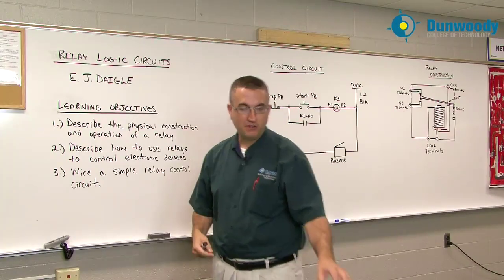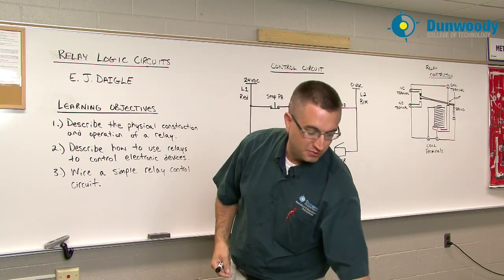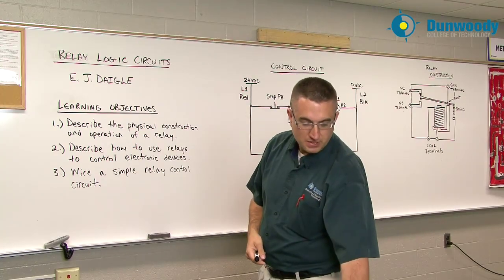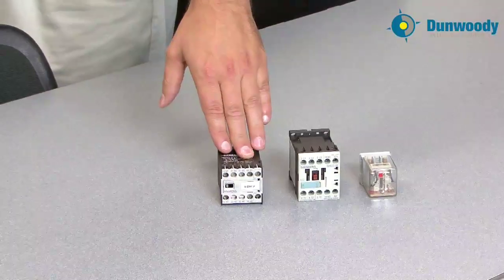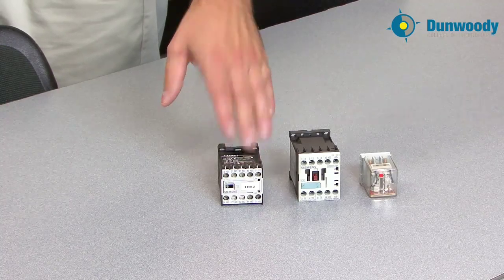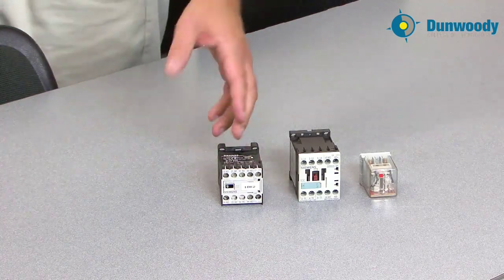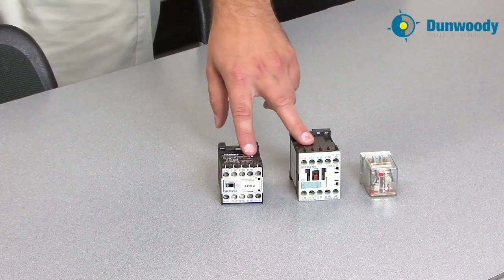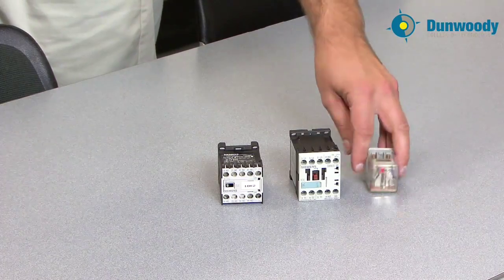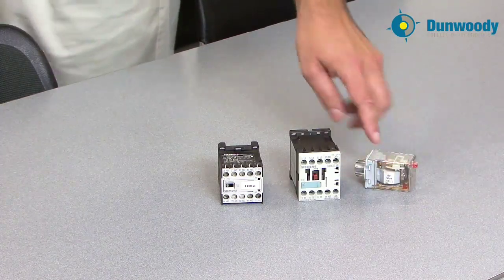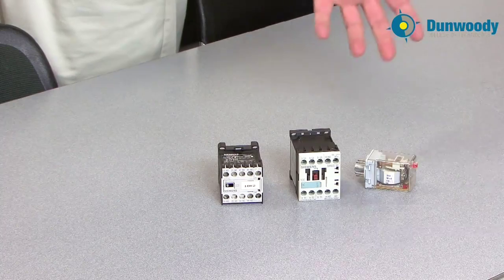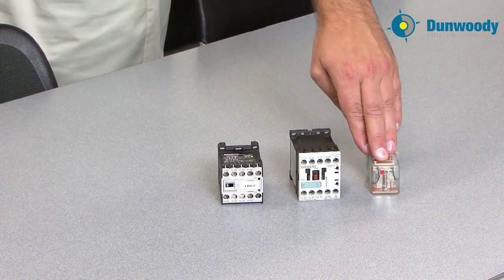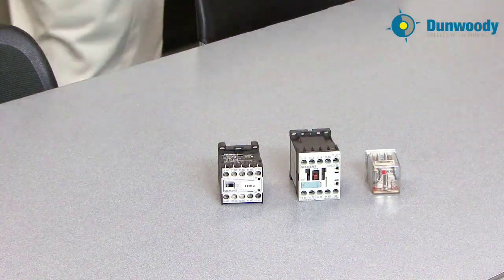The first thing I want to talk about is there are several different types of relays out there that you may see. I've got a few samples of them here. Some of them are much larger and they are what we call contactors. They can be used to start motors or control large current devices. A couple examples of those right here. And then there's a lot of relays that are more of an ice cube type relay like this one here. These are generally used in more of a control logic circuit. And then there's solid state relays and transistor based relays and a lot of other relays too, but I just want to show at least a couple of samples there.